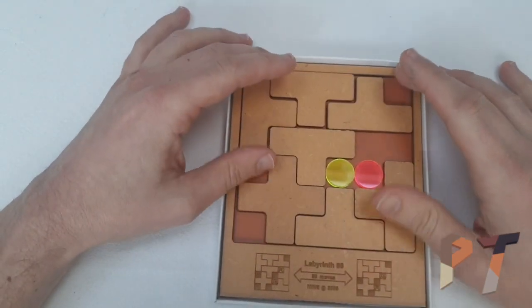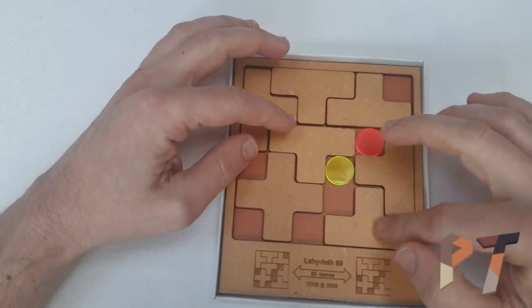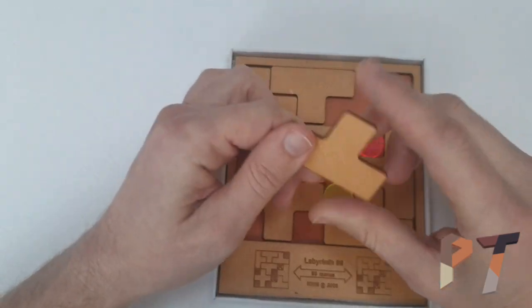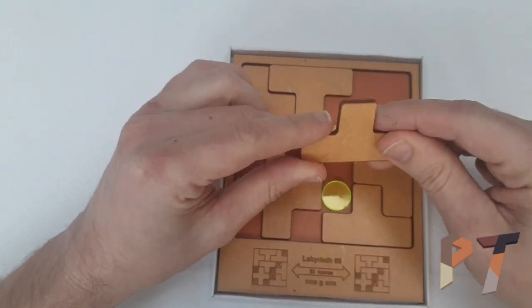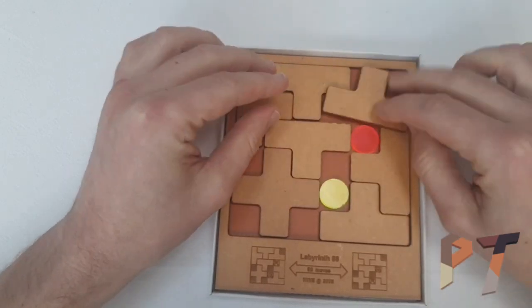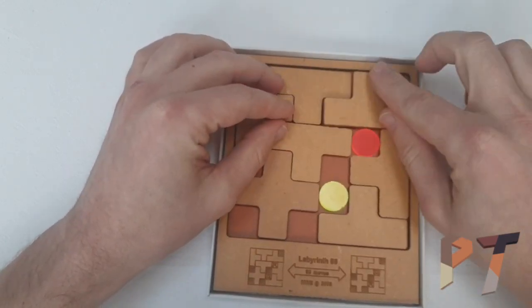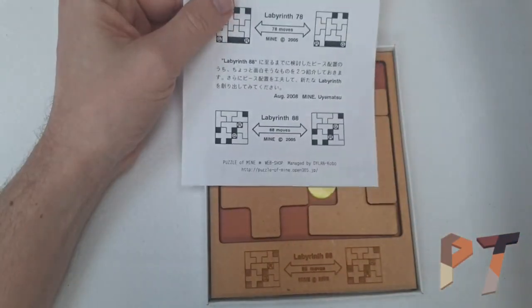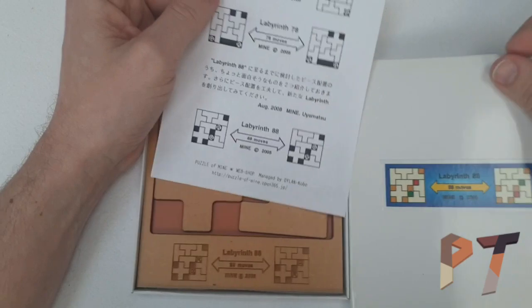Quite hard to get hold of these Mine puzzles, this Labyrinth 88. When they do come up, try and get hold of one. It's just laser-cut plywood, I guess MDF, laser-cut but really nice, nice etching, very clear instructions.